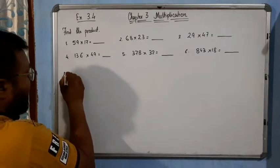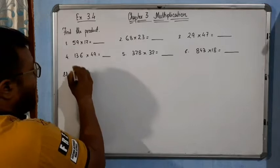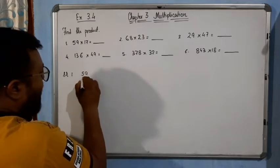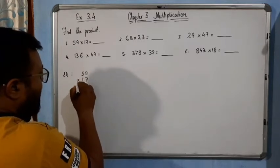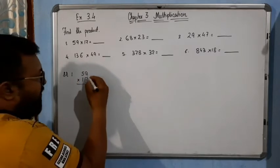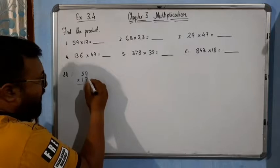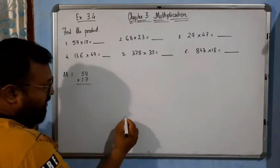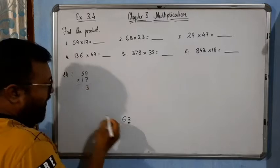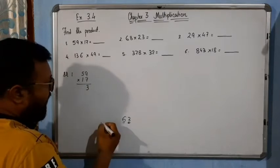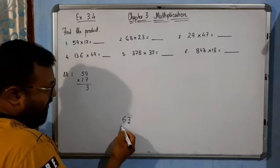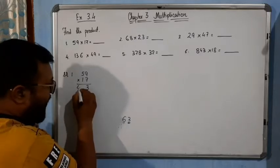Question number 1. Solution: 59 into 17. Very simple here. 7 times 9 is 63, so we will write 3 and 6 will be carry over. Then 7 times 5 is 35, plus 6 carry is 41. So we will write 41.